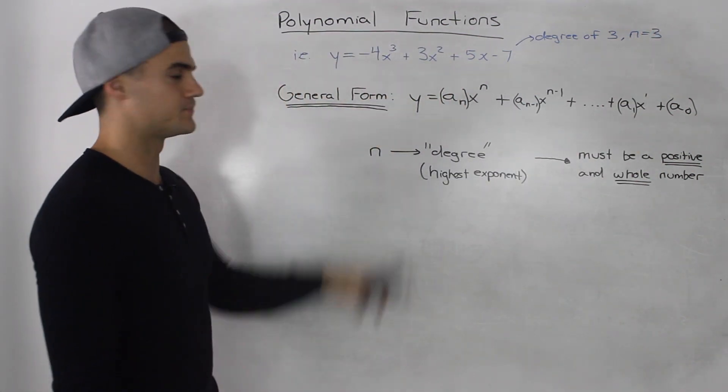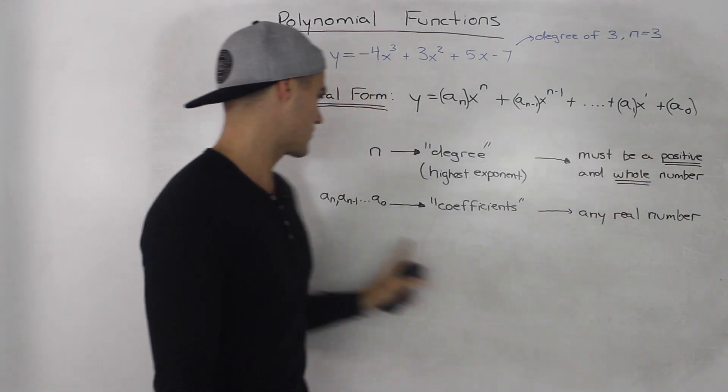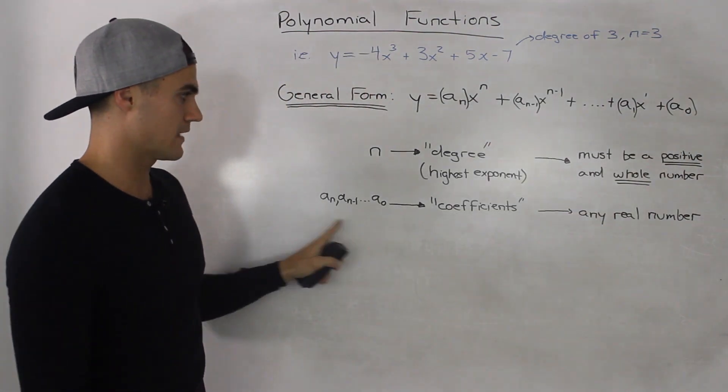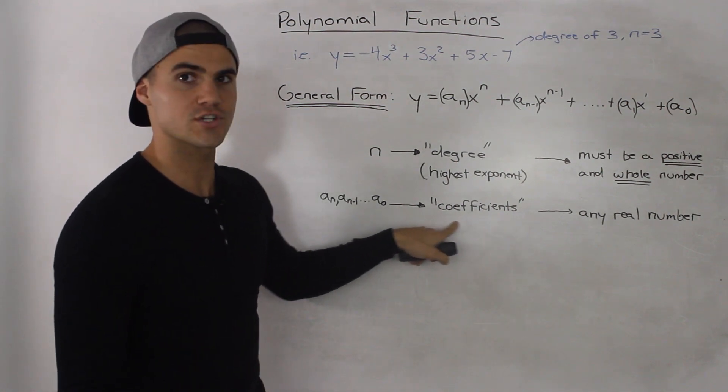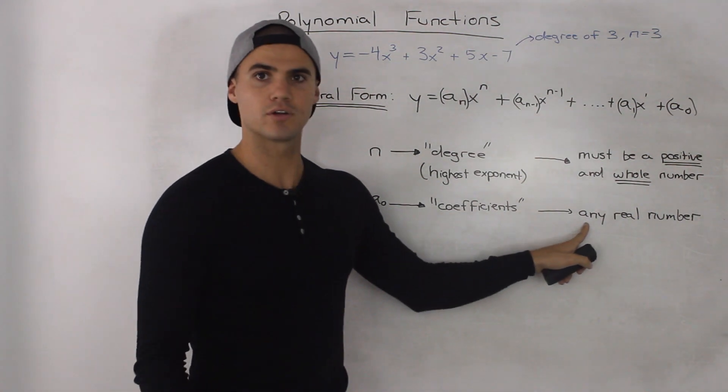The next parts are these a_n, a_(n-1), a_1, a_0. So I wrote these out here. And these are just called the coefficients in the polynomial function. And the coefficients can be any real number.